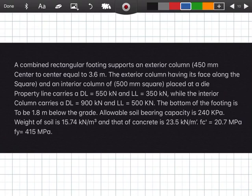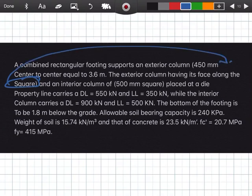Let us solve a combined rectangular footing. I'm sorry, I edited incorrectly. A combined rectangular footing supports an exterior column 450 mm square center to center equal to 3.6 meters.